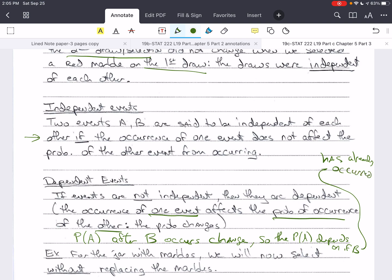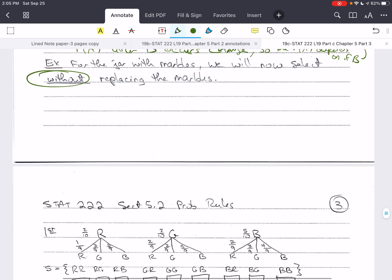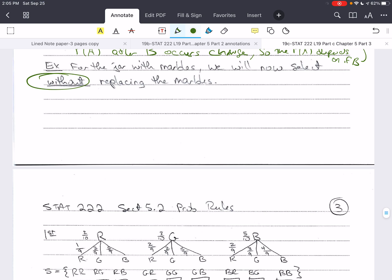Here's an example. We're going to go back to the jar with the marbles, and we're going to change the rules for how we select the marbles. Now, we're going to select them without replacement. We are not going to replace the marbles. And this is going to change things. We're going to end up with dependent events. So, let's take a look at this with our tree diagram. I've already written this out since we've done this once before, but I'm going to mark all these out so we can walk through what's important here.